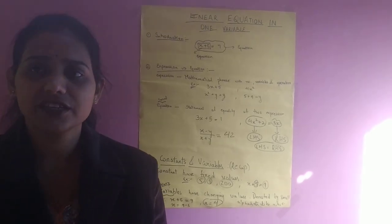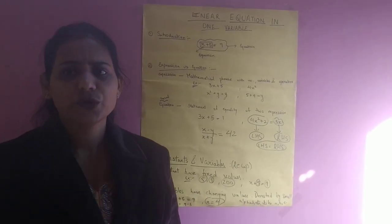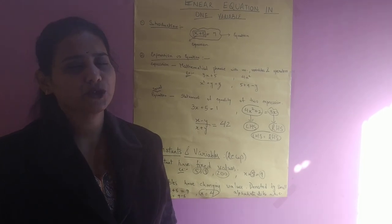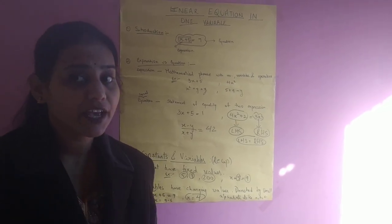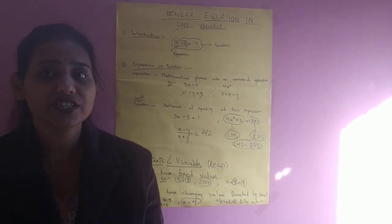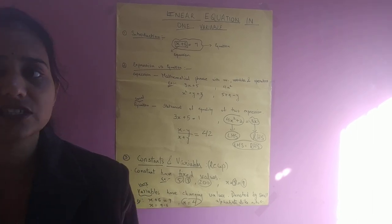Example: A, B, C, T, X, Y, Z, etc. You can take any small alphabet to denote variables. Variables does not have any fixed value. Its values changes or can vary.